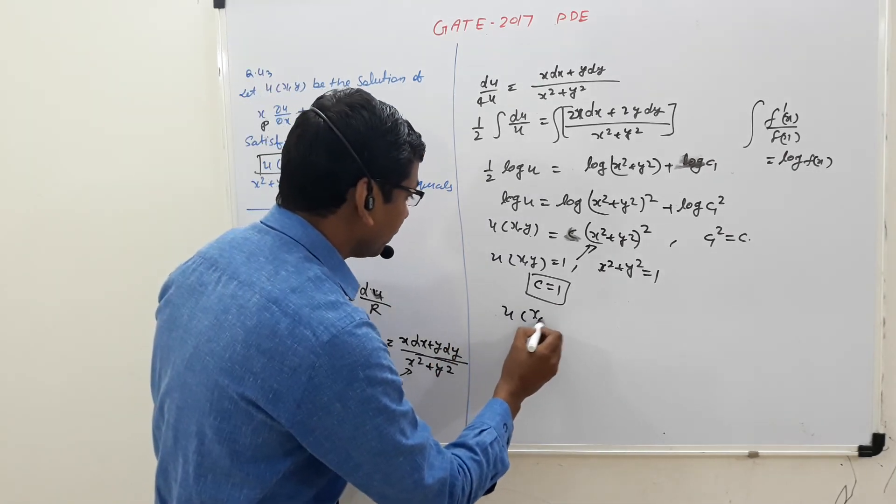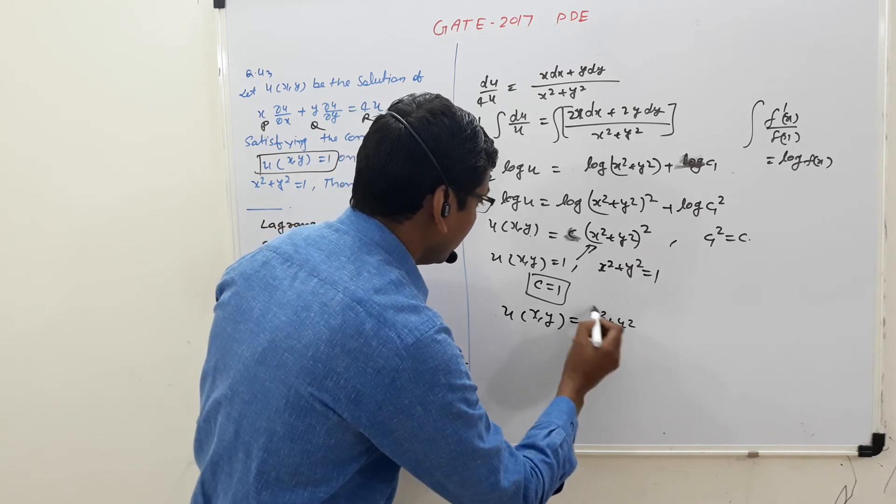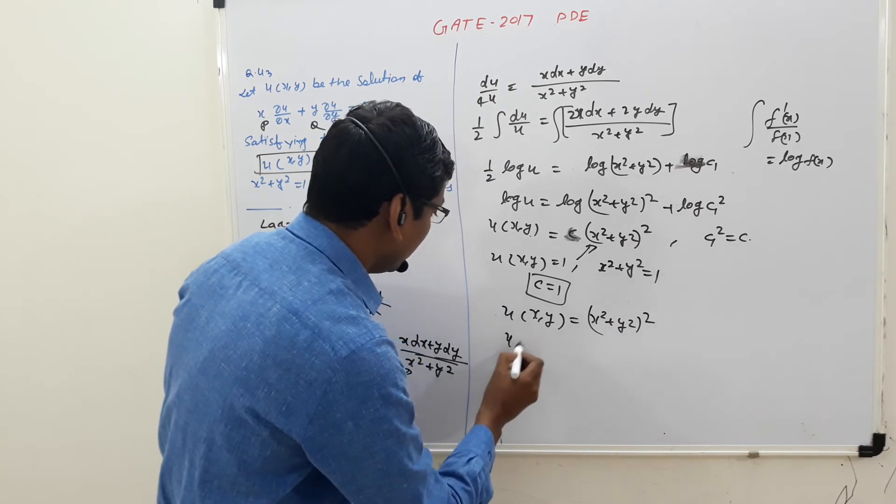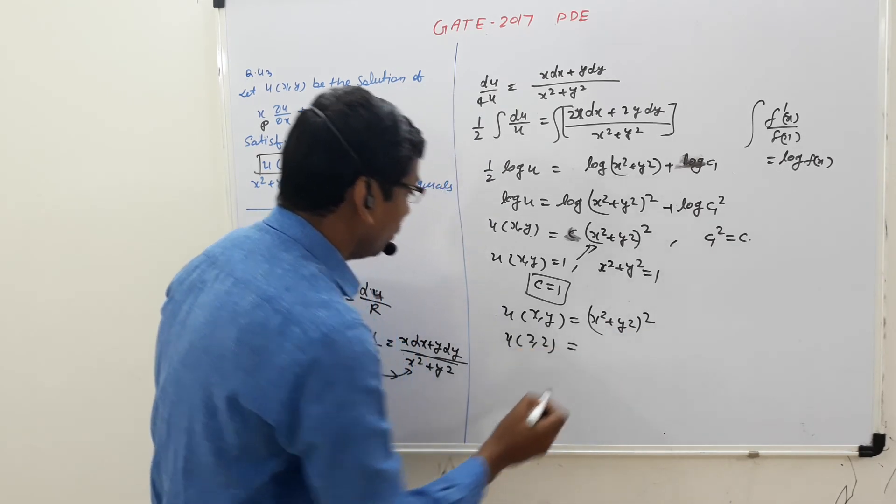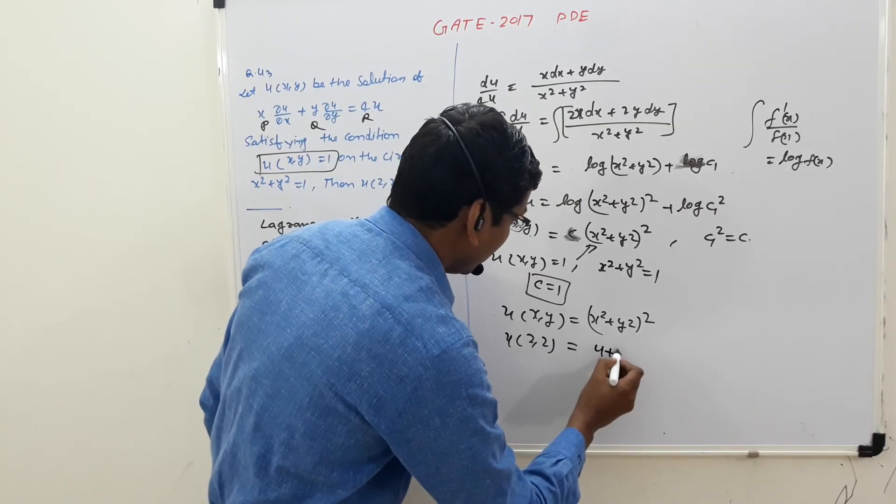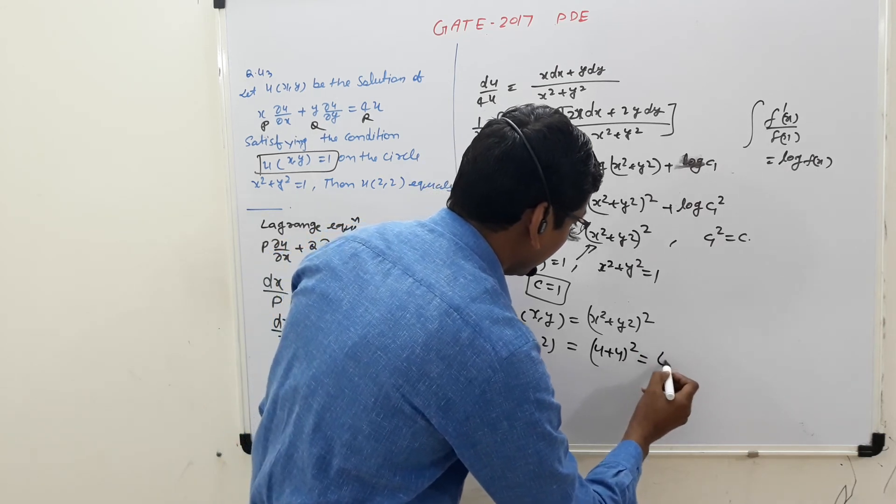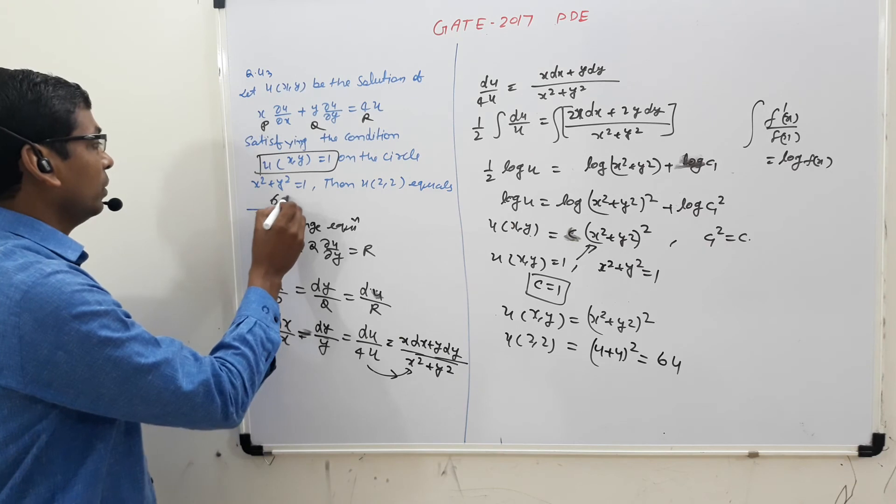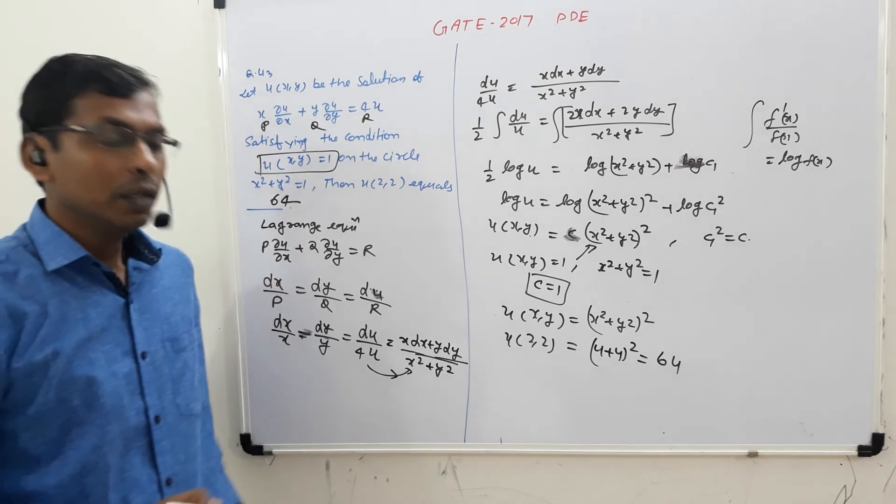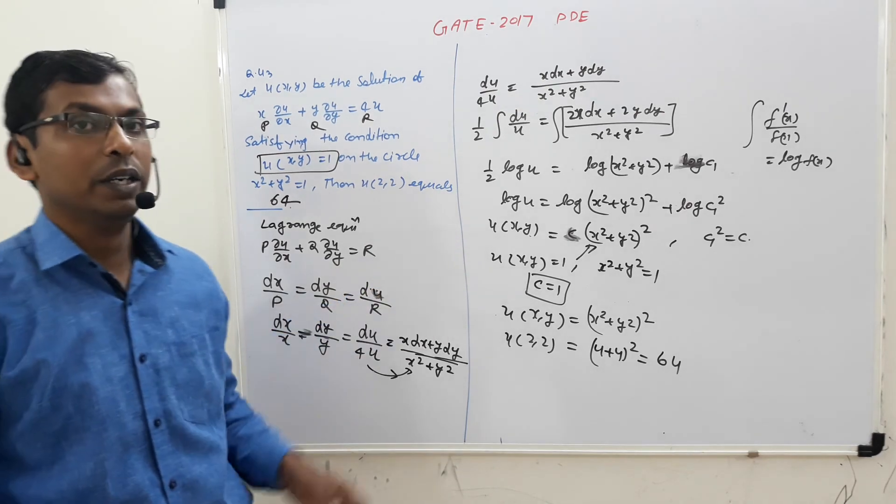So now the question asks for u(2,2). So u(2,2), find out this: 4 plus 4 whole square, that is 8, 64. So this is 64. So simply then go for calculations of the importance.